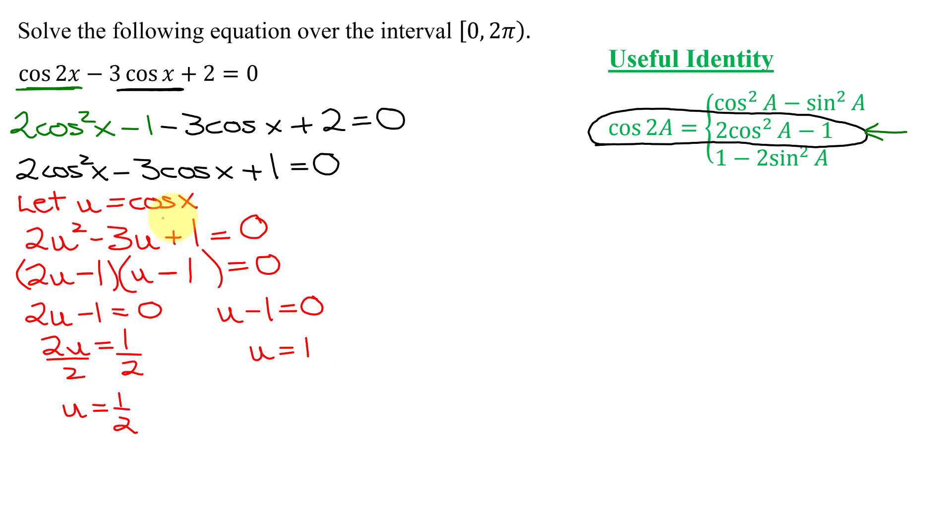Now we know that u equals cosine x. So I know the cosine of x equals positive 1 half, or the cosine of x equals positive 1. One thing to note is I solved this equation using a u substitution. But if you feel comfortable factoring a quadratic equation containing a trig function, you do not need to do the u substitution. But either method, you will end up with the cosine of x equals a half, or the cosine of x equals 1.